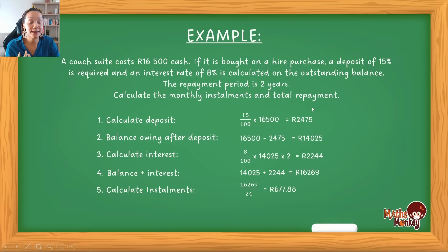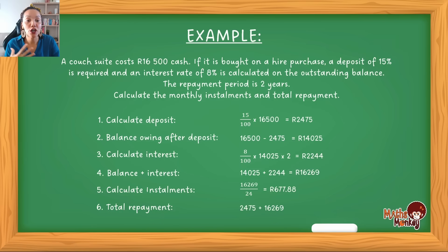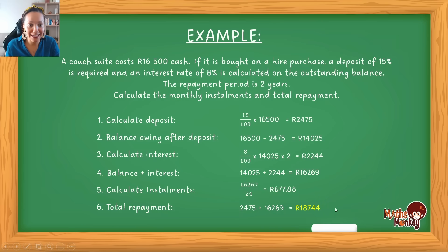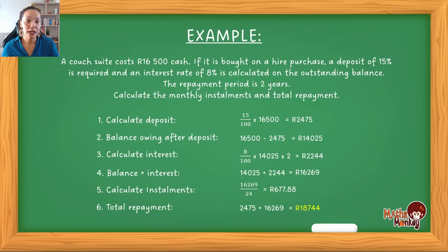The second part of the question asks for the total repayment — all the money that left your account to pay for this couch. The R2,475 was the deposit you initially paid. Then the balance plus interest was R16,269. So in total, after two years, you paid the deposit plus your installments, meaning you actually paid R18,744 for this specific couch. Compare that to R16,500 if you'd had the cash — you end up paying a lot more because you're paying it off over time.